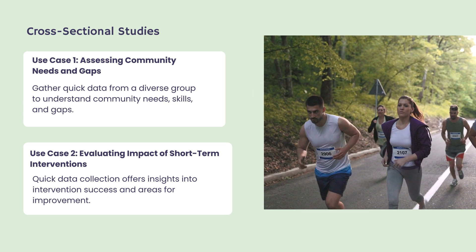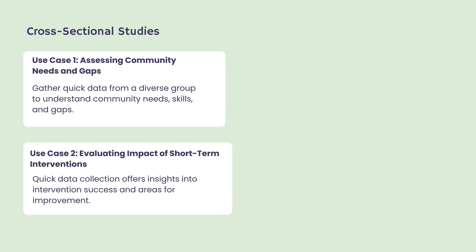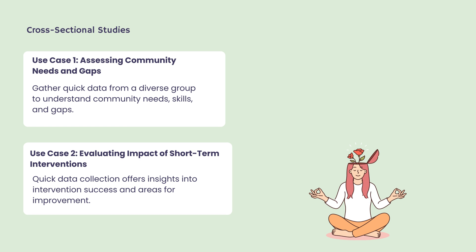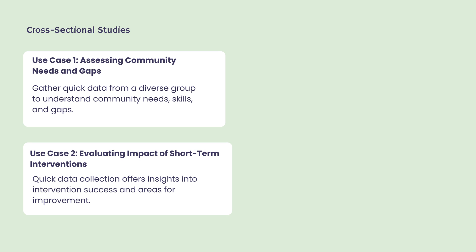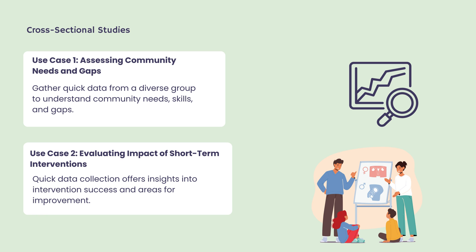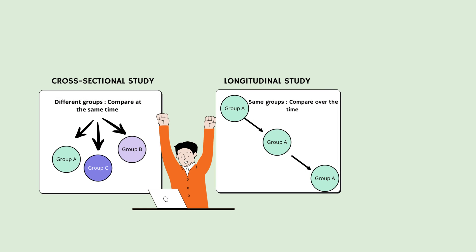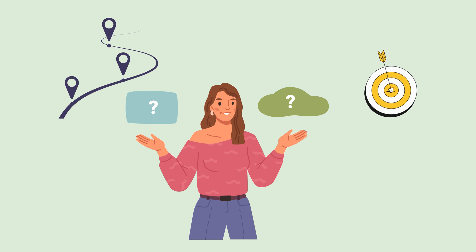Switching gears to cross-sectional studies — think of them as a single, revealing snapshot. When assessing a community's current training needs or evaluating a short-term intervention like a health awareness workshop, cross-sectional studies provide immediate insights. They're perfect for when you need a quick understanding of the present without the need to track changes over time. These studies are invaluable for policymakers and educators, offering a clear picture of where resources and programs are needed most. Whether you're tracking gradual development of skills over time with longitudinal studies, or capturing a broad overview of current conditions through cross-sectional research, both methodologies offer unique and powerful insights. Choosing the right approach depends on your research goals, timeline, and the story you're aiming to tell.